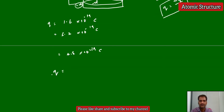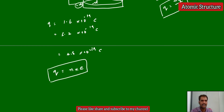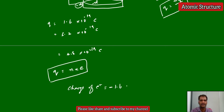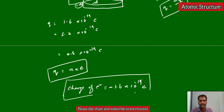The charge of the oil droplet is the integral multiple — n times — of a constant, which is the charge of the electron. This is the charge of electron found by the scientist Millikan.